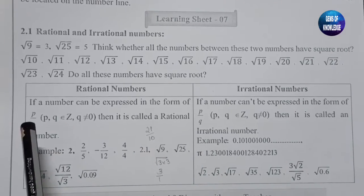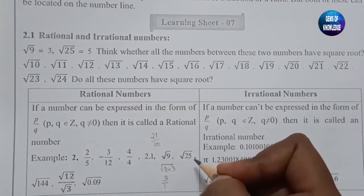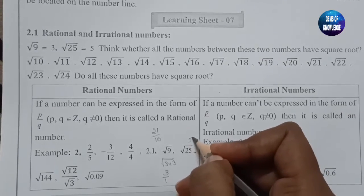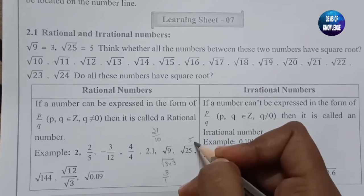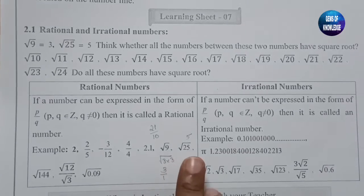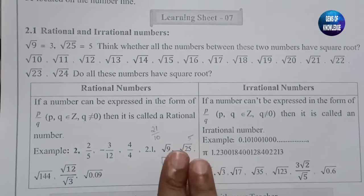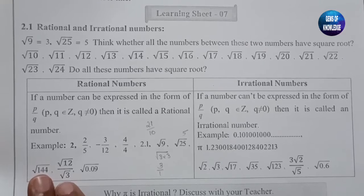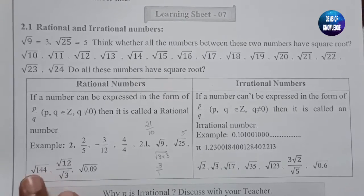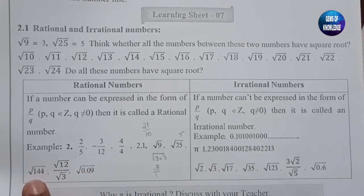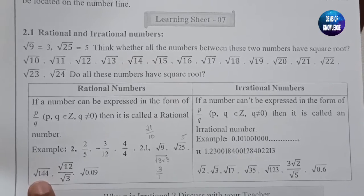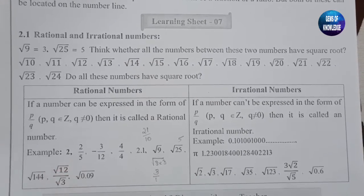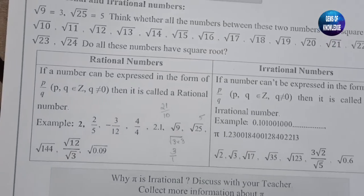Root 25 equals 5, so it is 5 divided by 1 — a rational number. Root 144 equals 12 (since 12 into 12 is 144), which is also rational. Next, root 12 by root 3 is also a rational number.